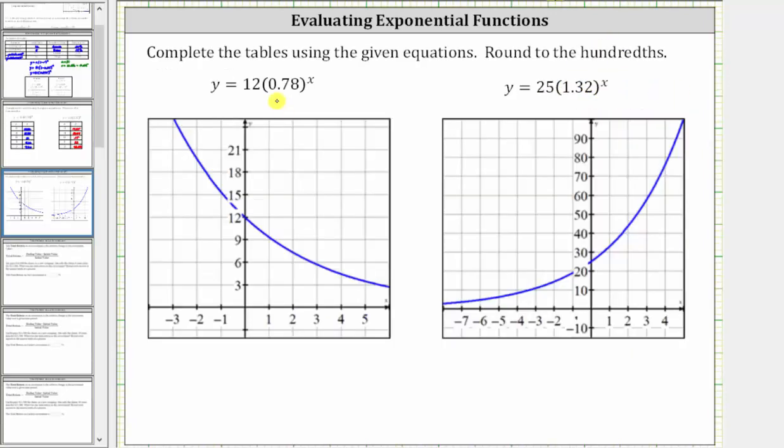Let's take a look at both of these graphs. For the first equation, notice how the graph is decreasing because we have exponential decay. Also notice how a is equal to 12, and the vertical intercept is zero comma 12.